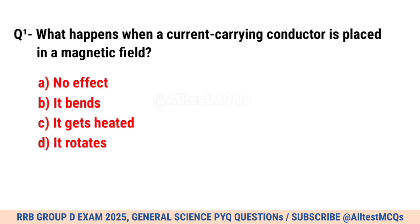Question No. 1. What happens when a current carrying conductor is placed in a magnetic field? Correct option is B. It bends.